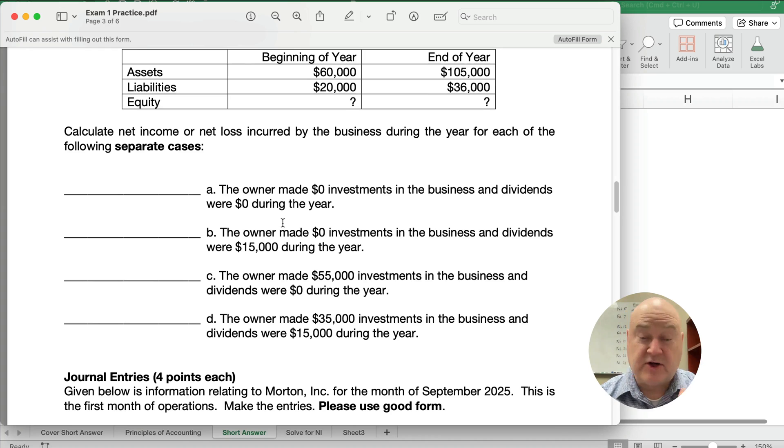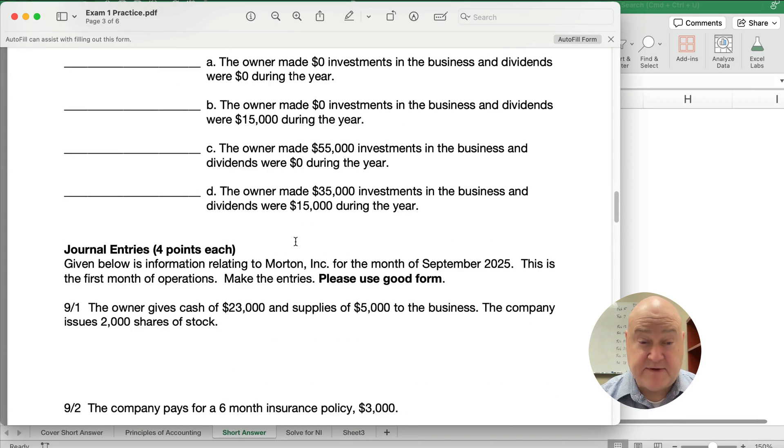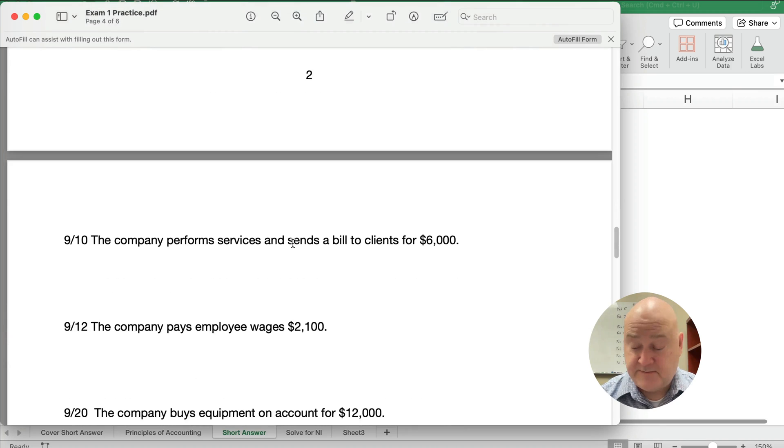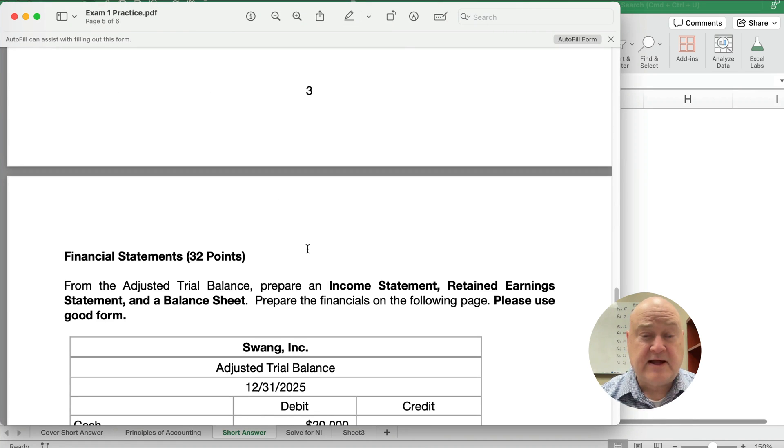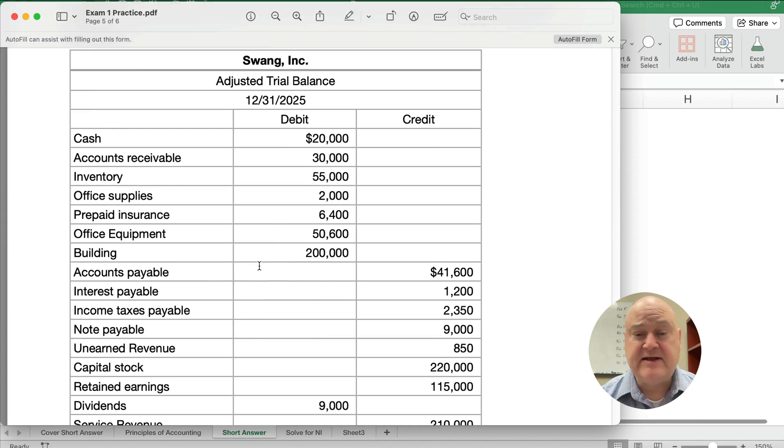And then the next video is journal entries. And the third video is how to do a little income statement. So journal entries here, and then what if you're given a trial balance and can you do financial statements based on that? Let's get started with our short answer.